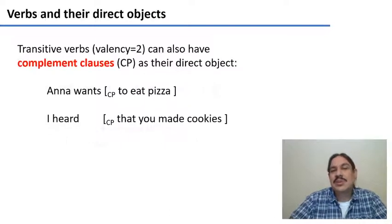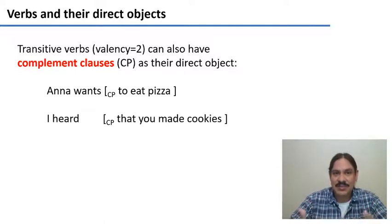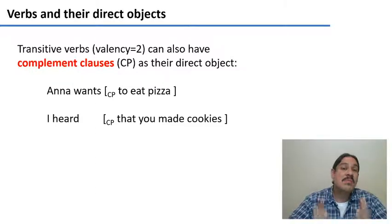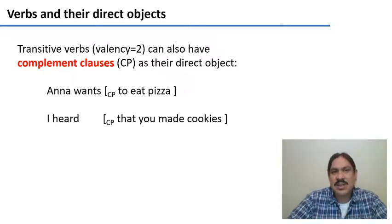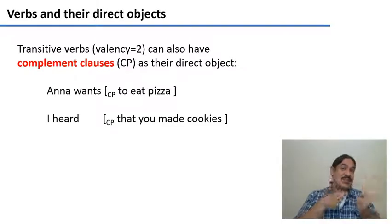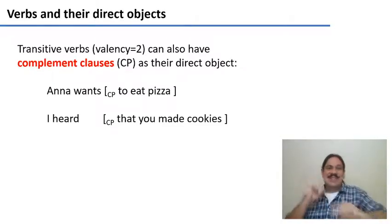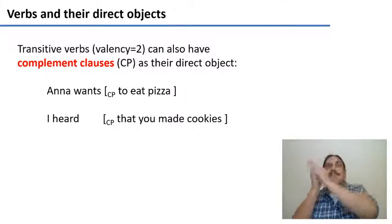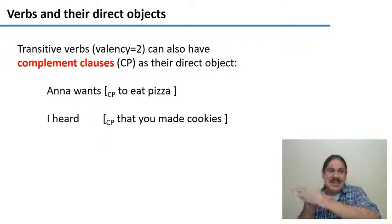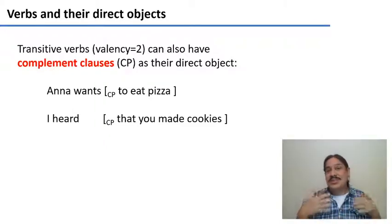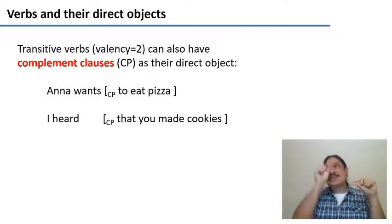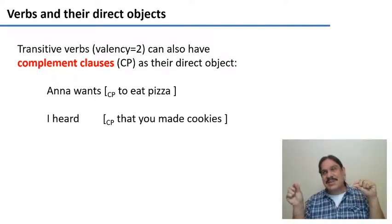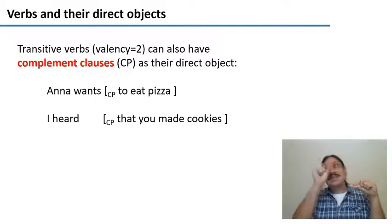Here we're going to look at one more type of direct object. Transitive verbs can take complement clauses as their direct objects. For example, in 'Anna wants to eat pizza' — what does she want? To eat pizza. 'I heard that you made cookies' — what did I hear? That you made cookies. Notice that it's working similarly to other direct objects: Anna wants — what does she want? Pizza. Anna wants — what does she want? To eat pizza.